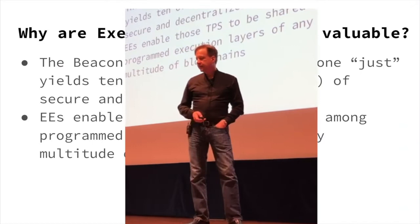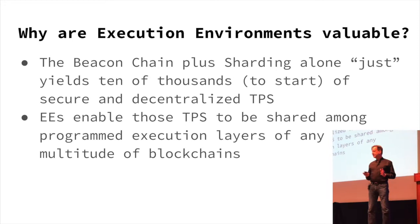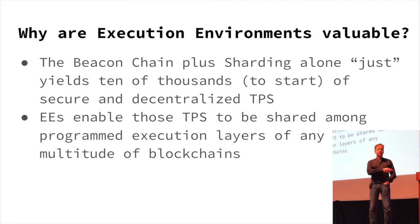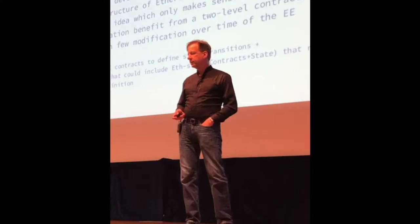The beacon chain yields — I'll put in quotes — just tens of thousands of TPS, and it's likely it could be hundreds of thousands or millions, because there's a lot of scaling built into Ethereum 2 beyond just the 1,024x factor. The execution environments allow those TPS to be split and shared across tons of conceivably different transaction models. That's the really exciting part — it's about scaling for Ethereum 2, but it's also about scaling the semantics of the blockchain to be really flexible. We won't get locked in the way we did with Ethereum 1.